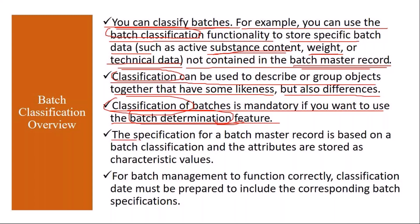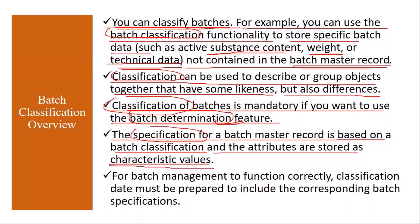The specification for a batch master record is based on batch classification, and the attributes are stored as characteristic values. All these batch-related specifications and attributes — like color, weight, potency, viscosity — are stored as characteristic values. For batch management to function correctly, classification data must be prepared to include the corresponding batch specification.